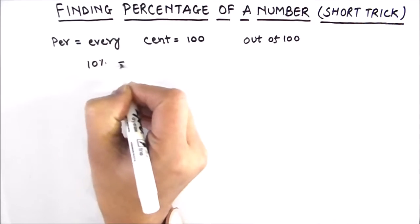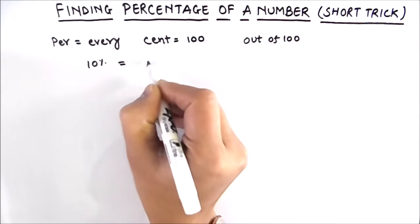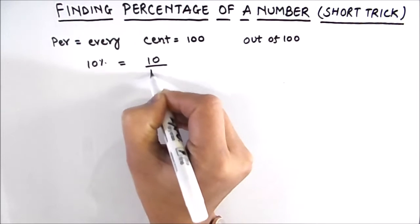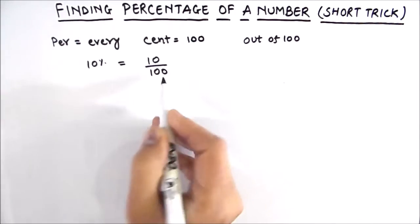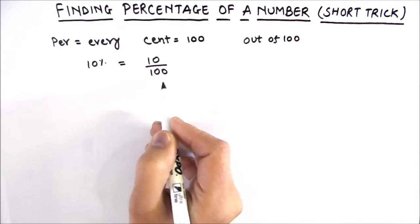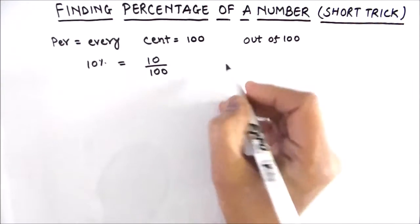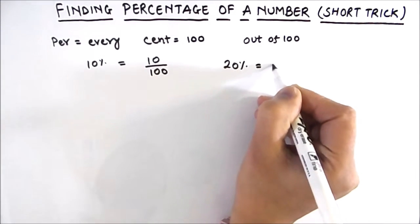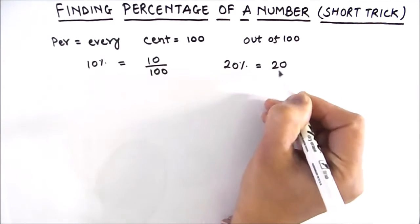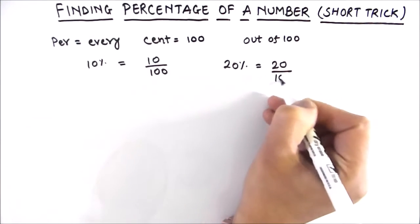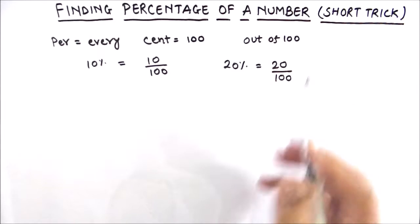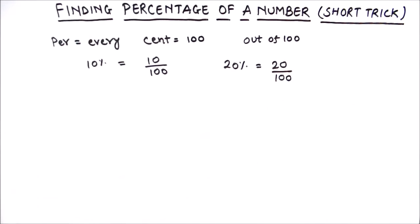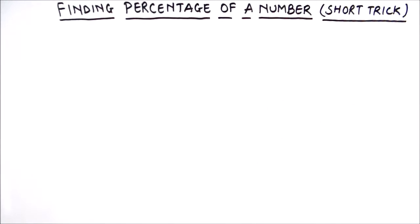For example, 10 percent can be written as 10 out of 100, so 10 percent is equal to 10 divided by 100. Similarly, 20 percent is equal to 20 divided by 100. So percentage means out of 100. Now let's talk about finding percentages of a number.